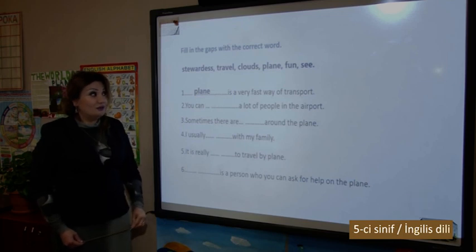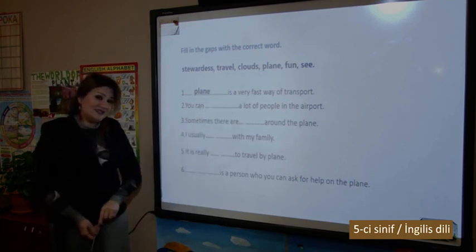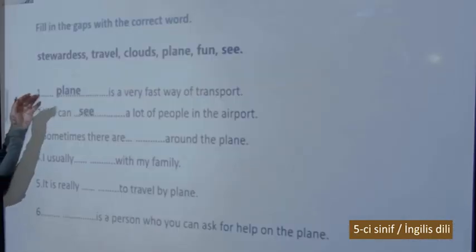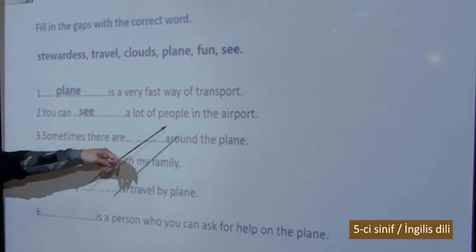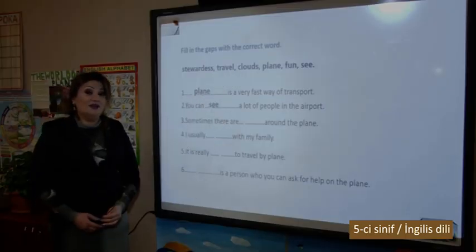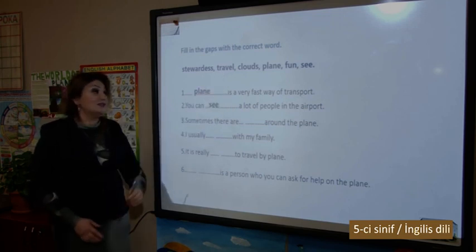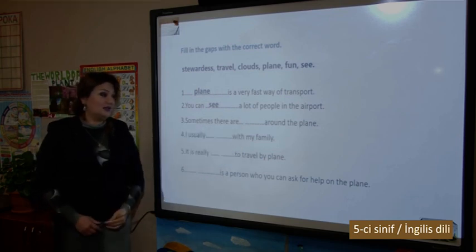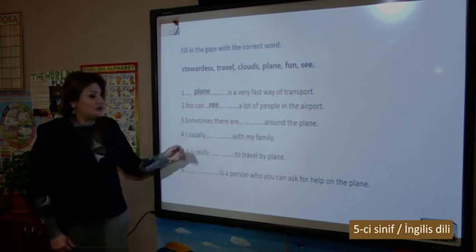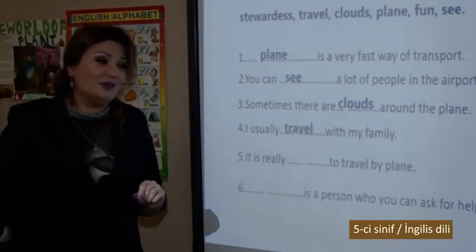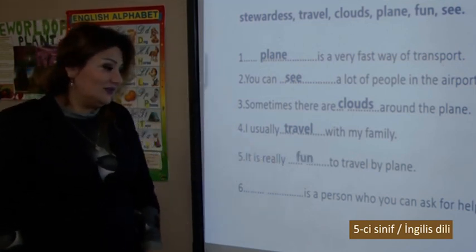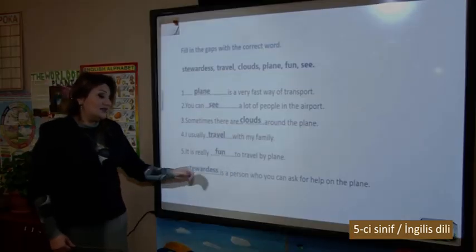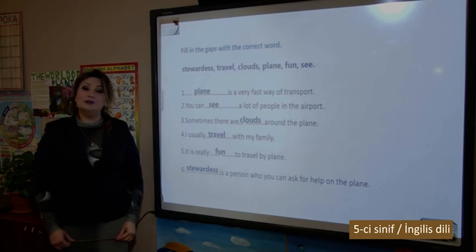After the modal verb we can use verbs — 'travel' or 'see.' The correct answer: you can see a lot of people in the airport. Sometimes there are clouds around the plane — 'clothes' is in plural, therefore: sometimes there are clouds around the plane. I usually travel with my family. It is really fun to travel by plane. A stewardess is a person who you can ask for help on the plane.